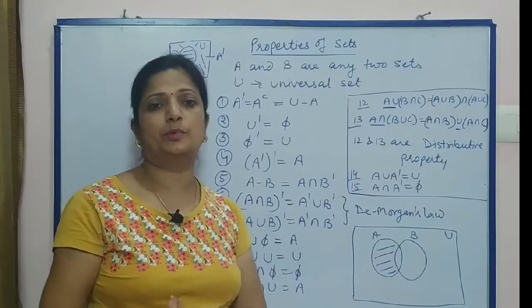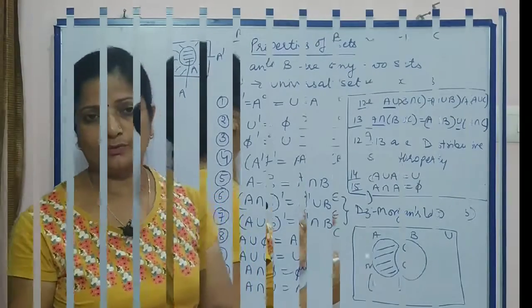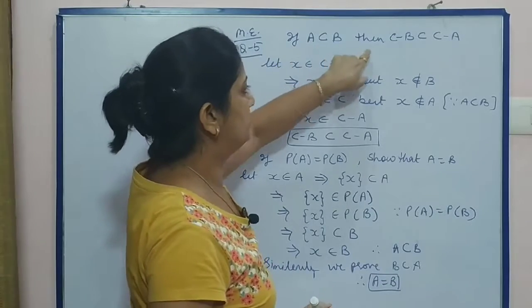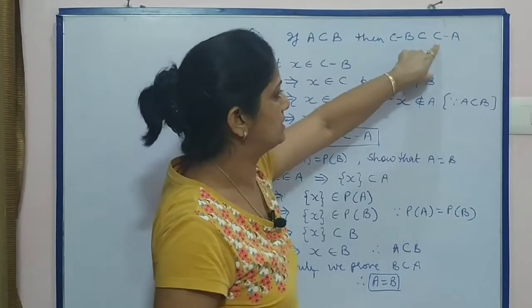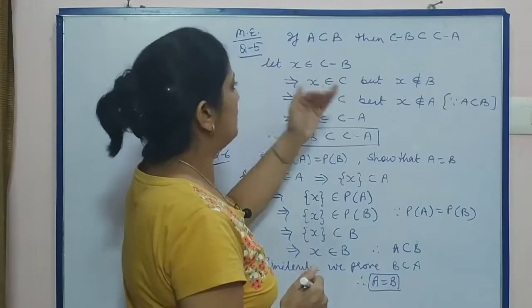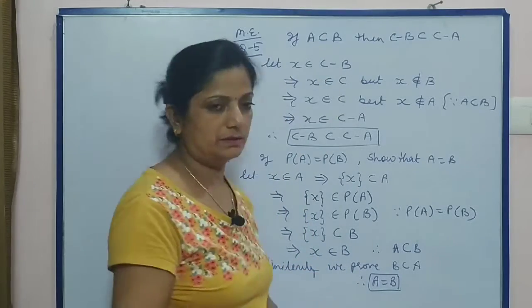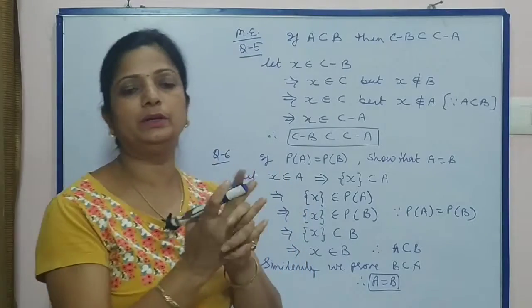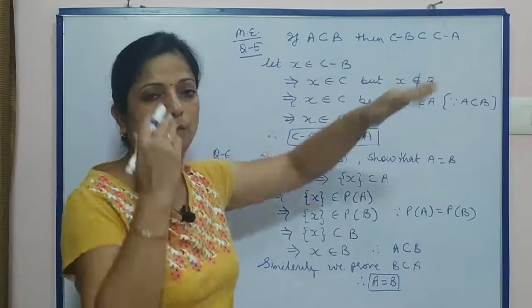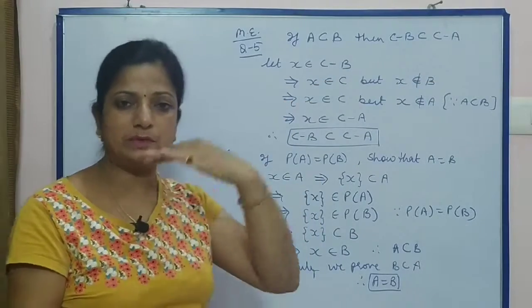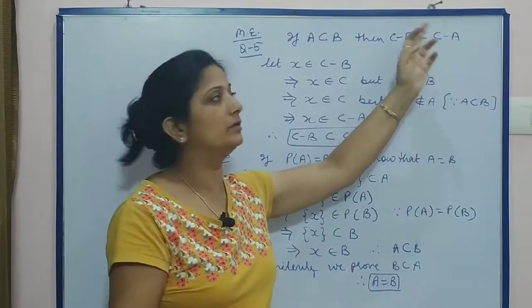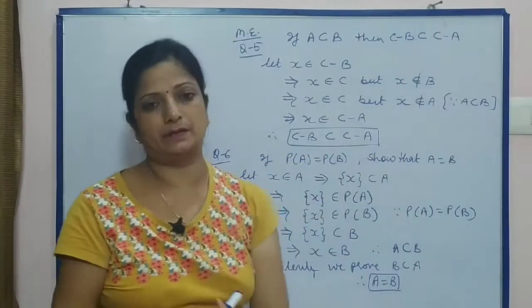Now question number 5 is: If A is subset of B, then C minus B is subset of C minus A. Generally, what we do is we take a general element which belongs to the first set. If we prove that it belongs to the second set, then it is sufficient to prove that the first set is subset of the second set. Let x belongs to C minus B.